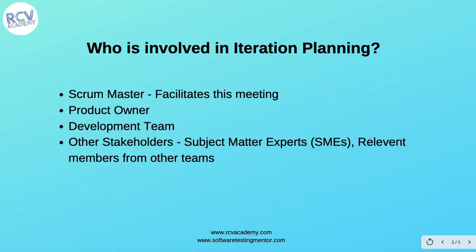Who is involved in iteration planning? The Scrum Master facilitates the meeting, the Product Owner is involved, and the whole development team participates. Other stakeholders such as subject matter experts and relevant members from other teams are also invited if required, but by default the Scrum Master, Product Owner, and development team are always involved.